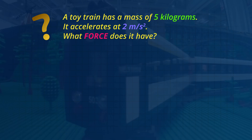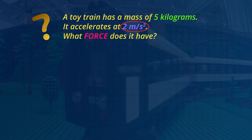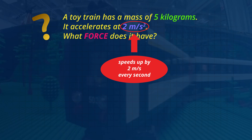Let's see an example. A toy train has a mass of 5 kilograms. It accelerates at 2 meters per second squared. What force does it have? A mass of 5 kilograms is the same as a mass of 5 liters of water. The train's acceleration of 2 meters per second squared means the train speeds up by 2 meters per second every second — that's like speeding up by 7 kilometers per hour every second.